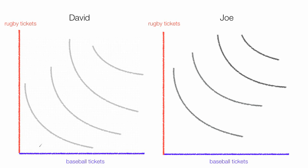Of course, David's utility increases upward like that, increasing utility. The same is true for Joe as well. We have two indifference maps, one for David and one for Joe.